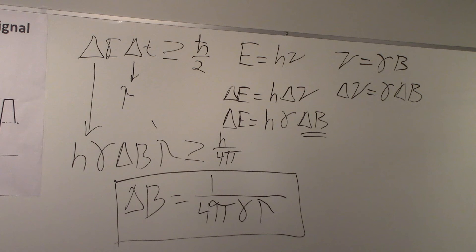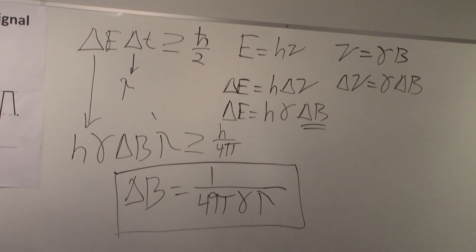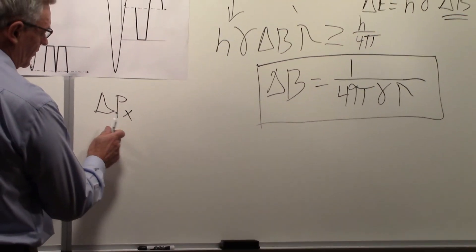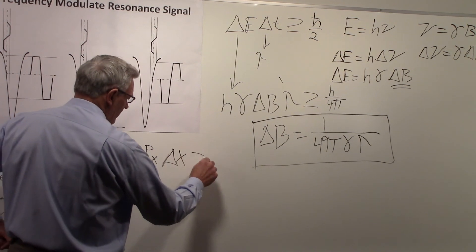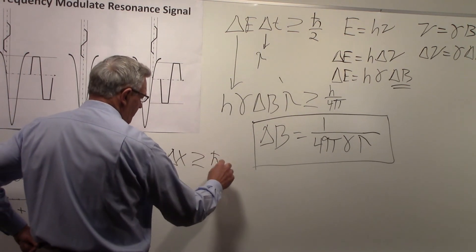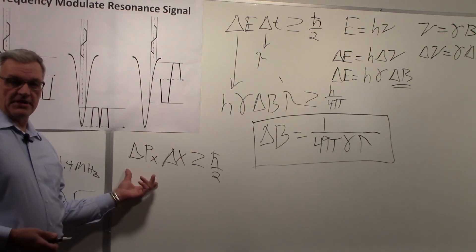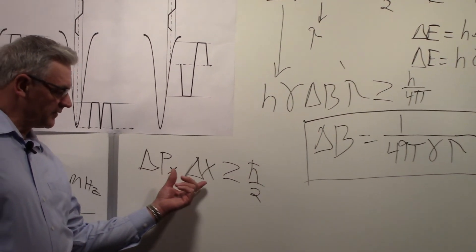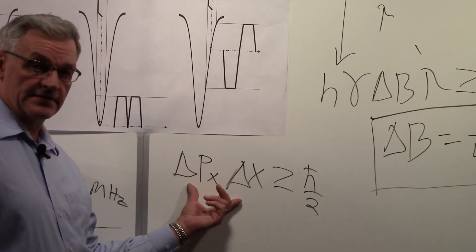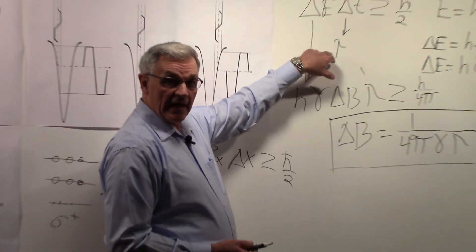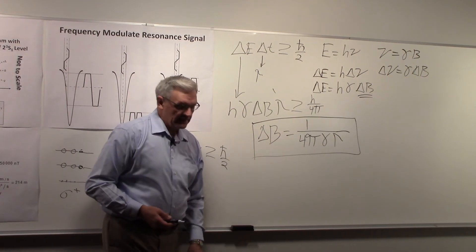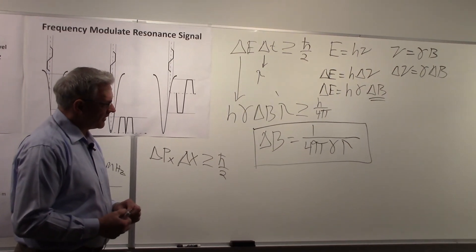How accurate is that? Well, one of the things you have to consider is when you do use a Heisenberg uncertainty principle, and most people are familiar with the one involving momentum and position. When you say that's greater than or equal to H bar over 2, that is for simultaneous measurements. You have to measure delta X and delta PX simultaneously for the uncertainty principle. We're not measuring tau. So our estimate here is a little bit on the high side.